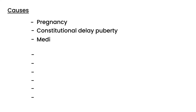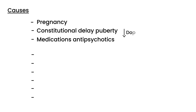The next cause is medications. Medications can disrupt hormone levels, and a very common example is antipsychotics. Antipsychotics decrease the level of dopamine. Dopamine normally inhibits prolactin, so if dopamine is low, prolactin inhibition isn't there and prolactin levels rise. When prolactin levels rise, you get a disruption of the hypothalamus-pituitary-ovarian axis.